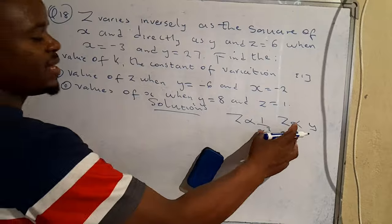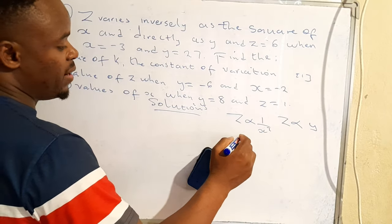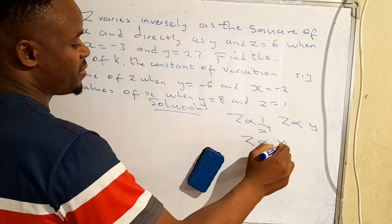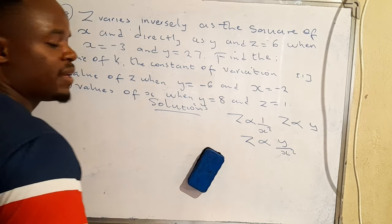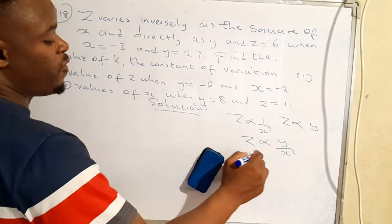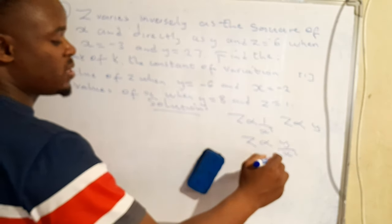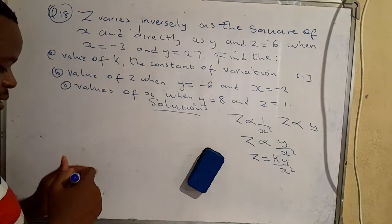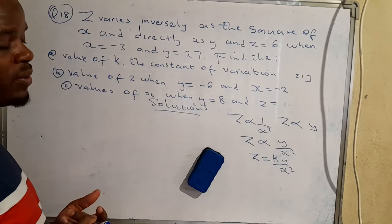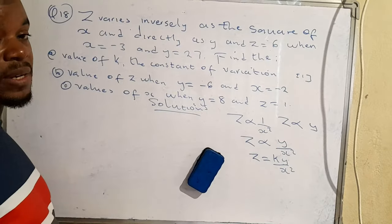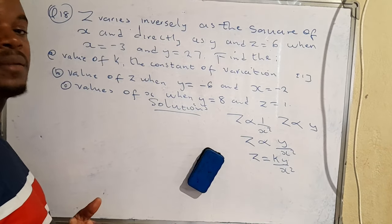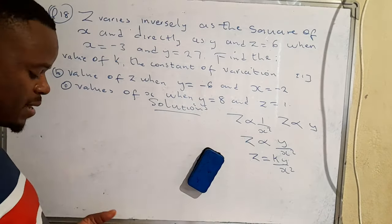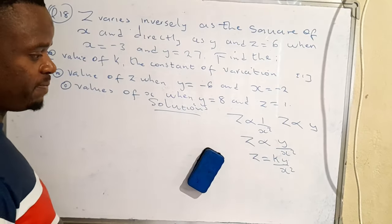When we combine these two variations, we have z varies directly as y and inversely as the square of x. When we formulate the equation we get z = ky/x². If you can't formulate that equation, you need to check my channel for the playlist specifically on variation.